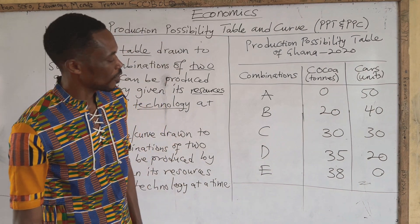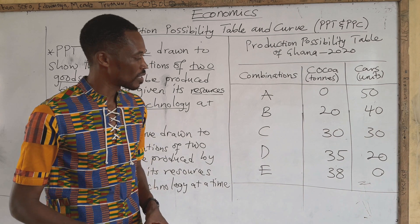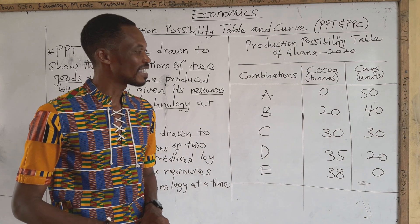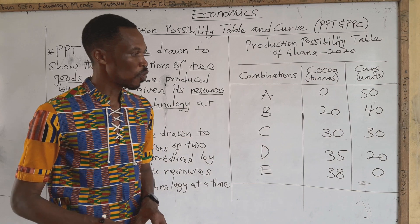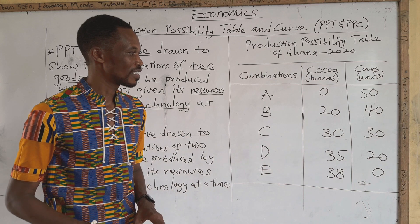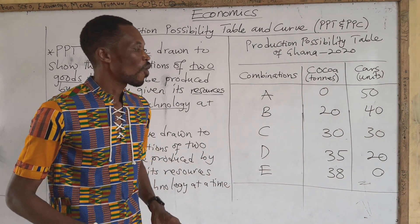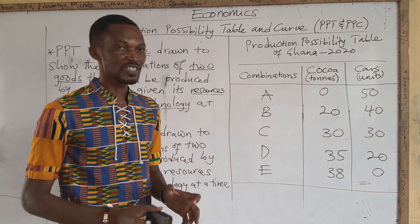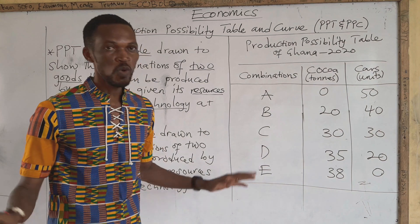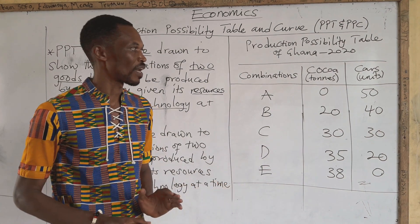What about combination E? When the country chooses combination E, the country will produce 38 tons of cocoa and zero units of cars. The implication is that the country is using all its resources and the level of technology to produce only cocoa and nothing of the cars.